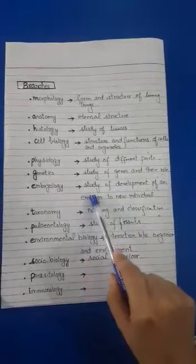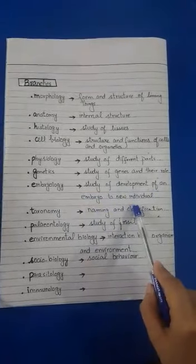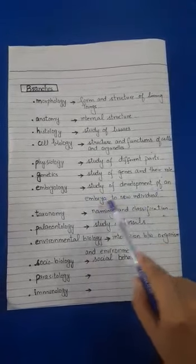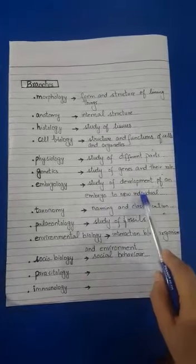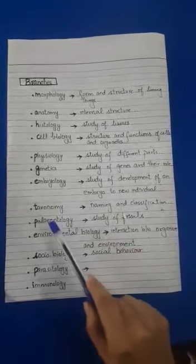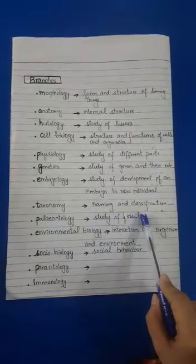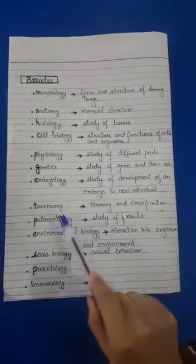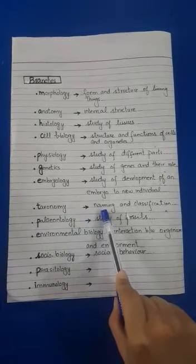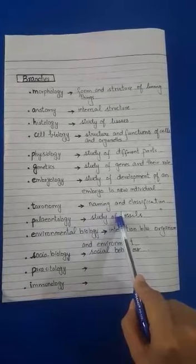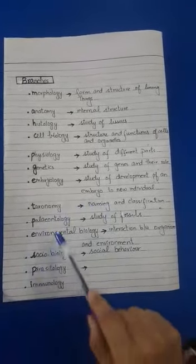Embryology is a branch of biology in which the study of development of an embryo into a new individual is studied. Taxonomy is the naming and classification of living things. For example, plants are classified as flowering and non-flowering plants — this classification is called taxonomy.